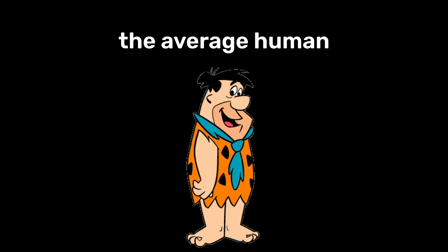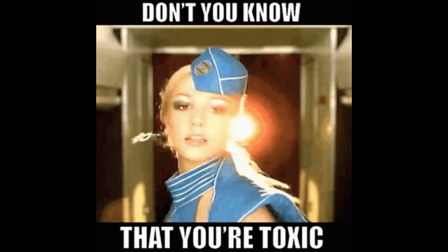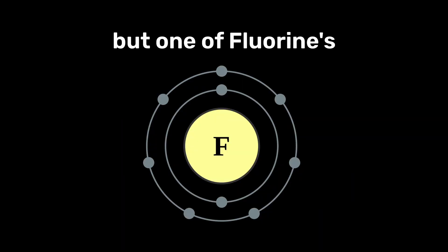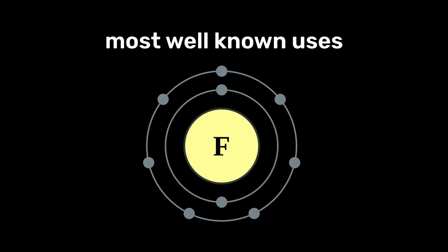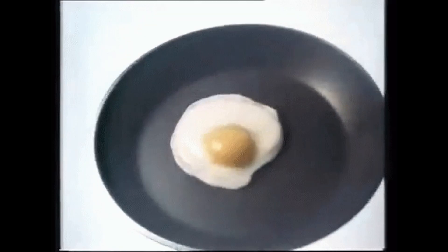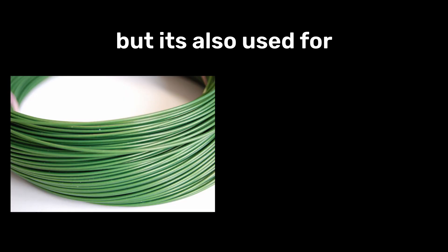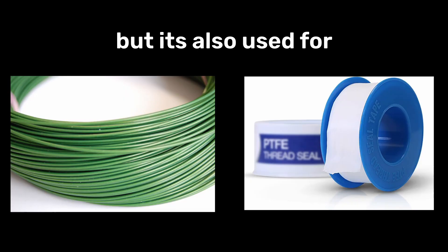The average human body contains about 3 milligrams of fluoride, and too much fluoride is actually toxic. But one of fluorine's most well-known uses is actually in the production of Teflon. Teflon is best known for its non-stick properties, commonly featured in frying pans, but is also used for cable insulation and plumber's tape.